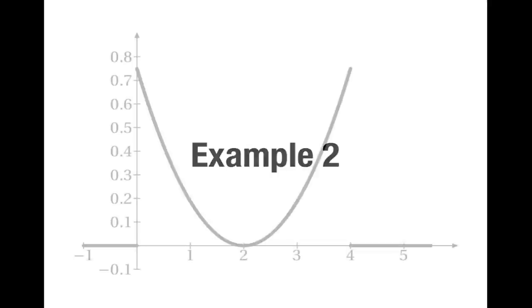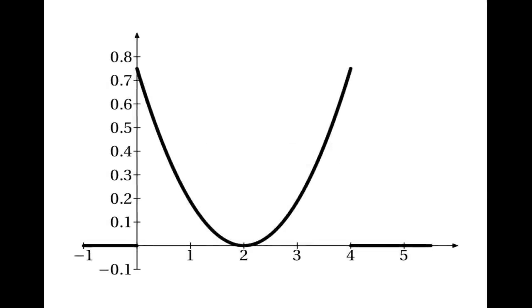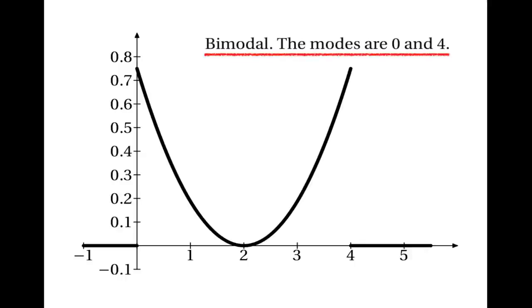Here's another example. What do you think the mode is in this case? Well, this case is slightly unusual because there are two places with equal highest probability density. Both 0 and 4 have the highest probability density.